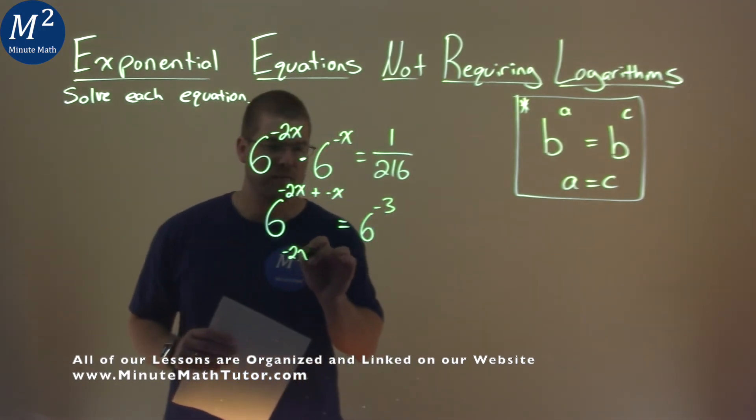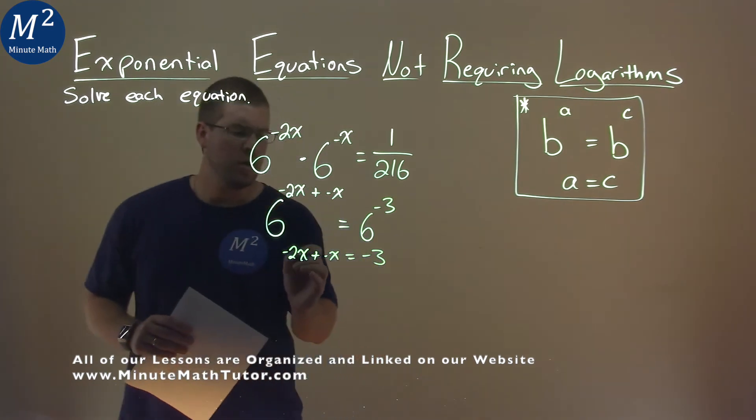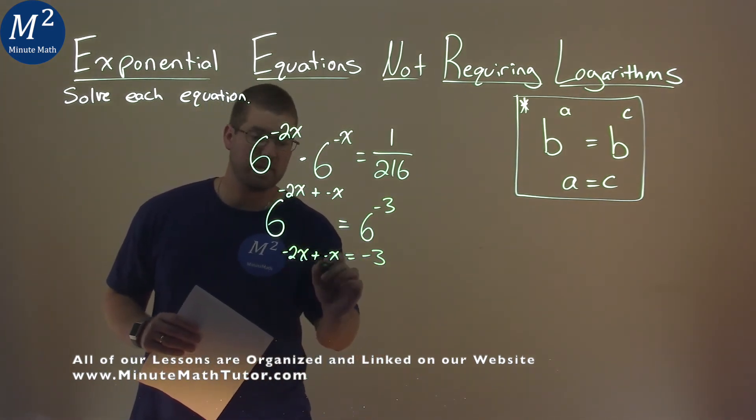We take a negative 2x now plus a negative 1x, and it's equal to that negative 3. Well, negative 2x plus a negative 1x is a negative 3x, and it's equal to a negative 3.